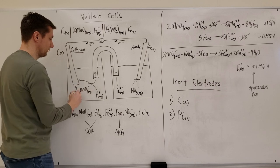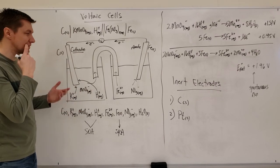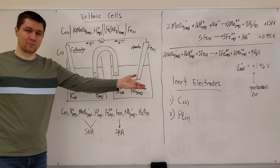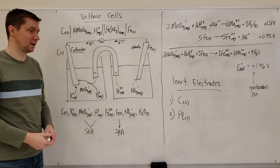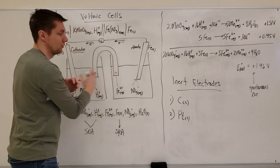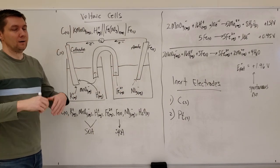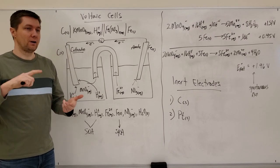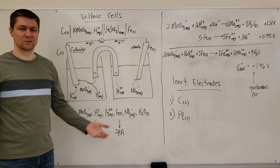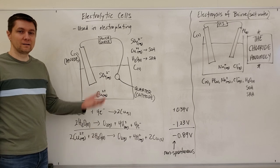In the two examples done here, it's coincidental that the cathode ended up on the left - the cathode can be on the right depending on how the cell was set up. You just have to identify where reduction is occurring, and that's the cathode. The other electrode has to be the anode because there are only ever two electrodes in these examples.